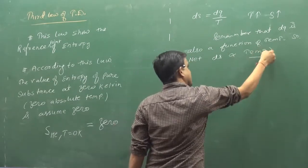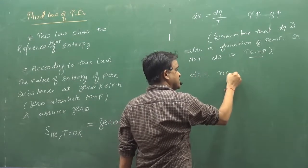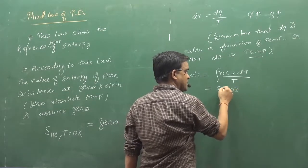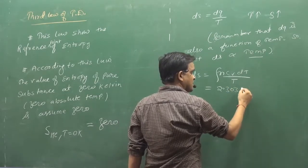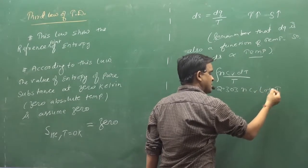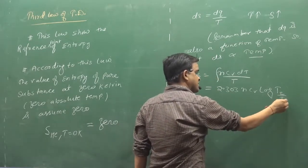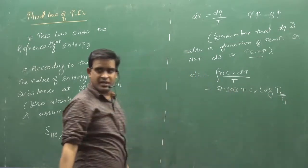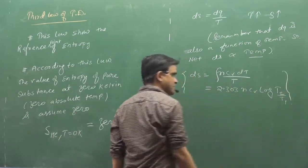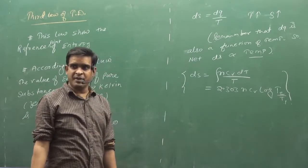Net dS is proportional to temperature, and dQ is also a function of temperature. So if we talk about an isochoric process: dS = nCv log(T2/T1). So entropy will increase as temperature increases.